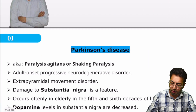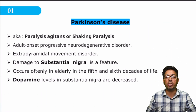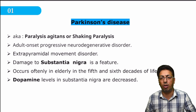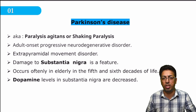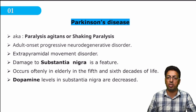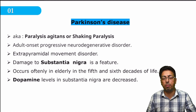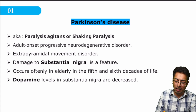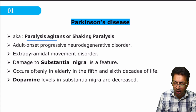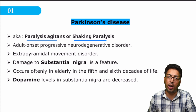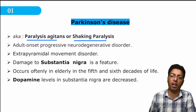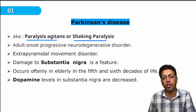The first thing you have to remember is that sometimes alternative names are asked for a disease. Parkinson's disease has multiple names — one of the names given to this disease is paralysis agitans, and the other name is shaking paralysis. You have to remember that these are the alternative names of the same disease.